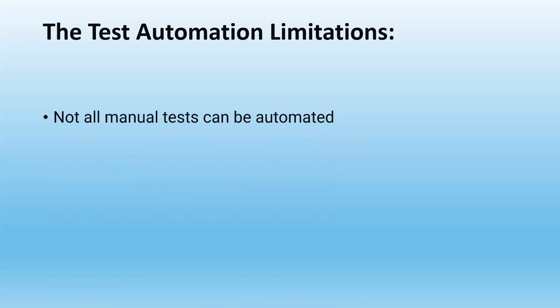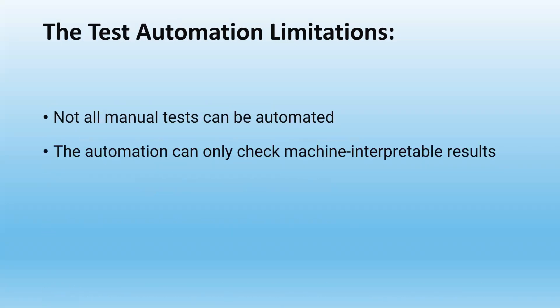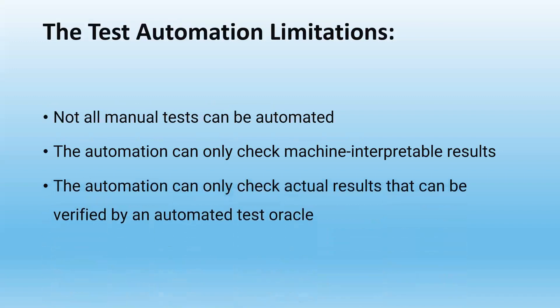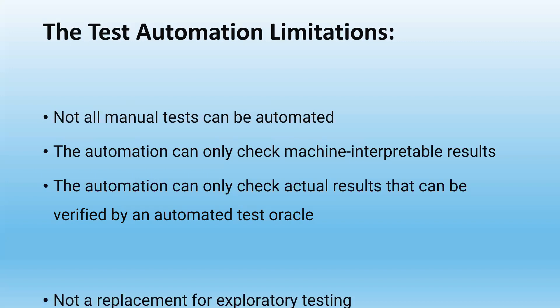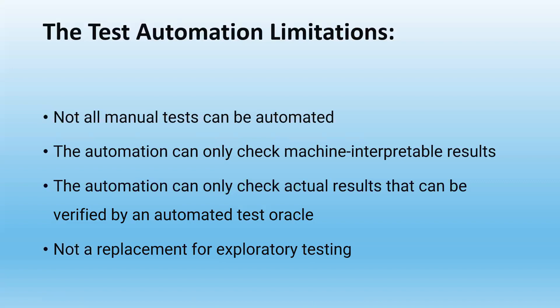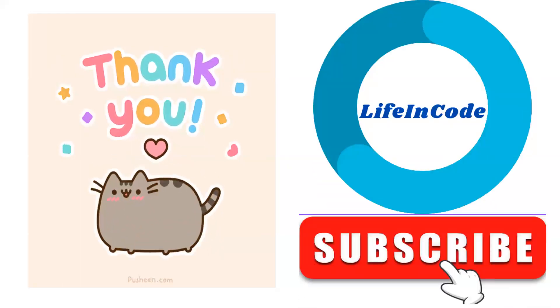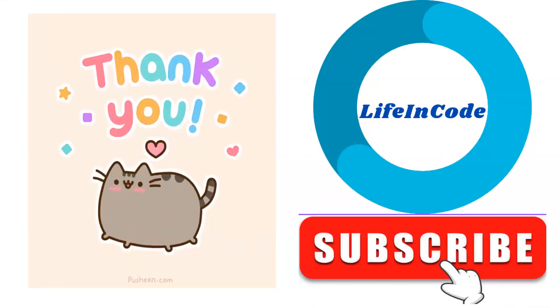Let's see what the limitations are in automation. Not all manual tests can be automated. Automation can only check machine-interpretable results. Also, automation can only check actual results that can be verified by a defined method, as we mentioned in the drawbacks. And it is not a replacement for exploratory testing. Thank you — subscribe to my channel, stay tuned for the next video in this series, and check out the other videos as well. Thank you.